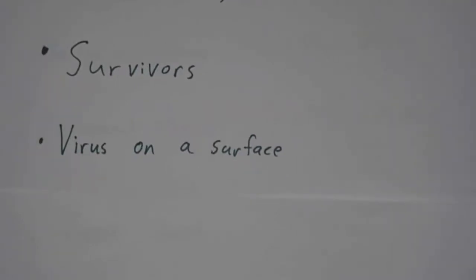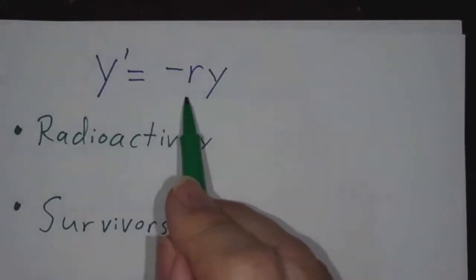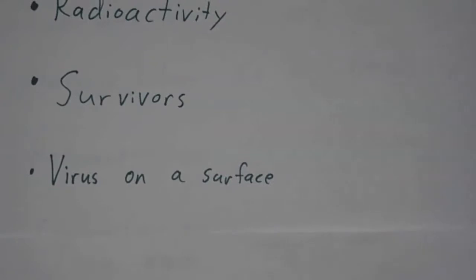For example, if you're worried about a box that was just delivered on your doorstep—might it have some germs on it? Well, you put it in the sunlight, and those germs are going to die. The longer you leave it out there, the fewer germs will be left. The rate at which the germs are being eliminated is proportional to how many germs are left.